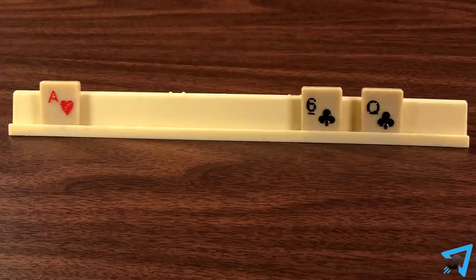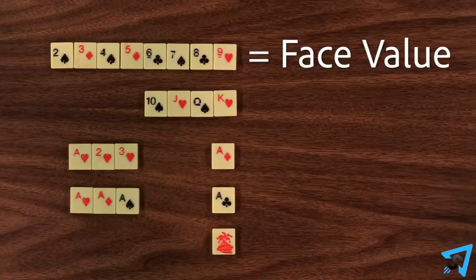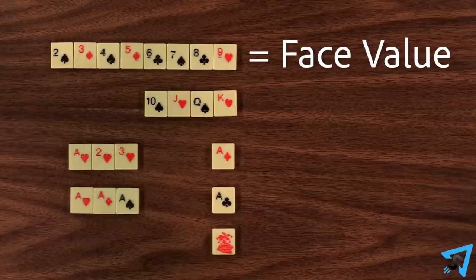After you play down tiles, you draw tiles to your rack until you get back up to seven, and then you score points. To score points, each tile two through nine is worth its face value.